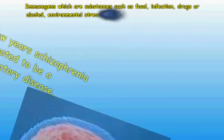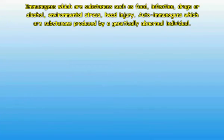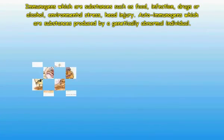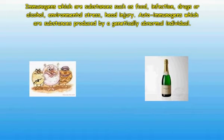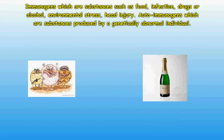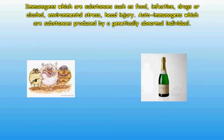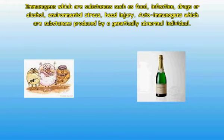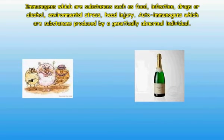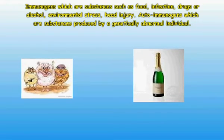Inflammation of the brain is due to an abnormal immune response. There are two categories of triggers: first, immunogens, which are substances such as food, infection, drugs or alcohol, environmental stress, or head injury; and second, autoimmunogens, which are substances produced by a genetically abnormal individual. Several abnormal genes have been discovered in schizophrenia, such as DISC1 and MAGUININE, which affect nerve cell or brain growth and result in the abnormal immune response.